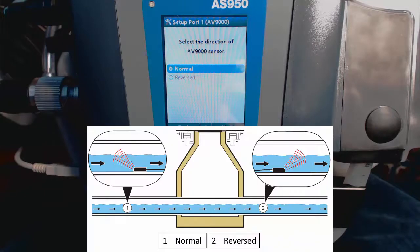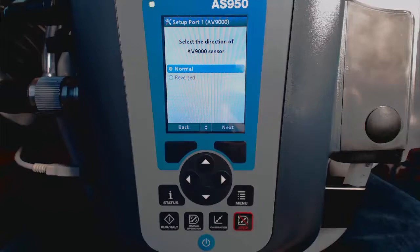The first question pertains to sensor direction. Choose Normal or Reversed, based upon which direction the sensor will face in the flow. Next, we will select the Flow Calculation Method, and with an AV9000, you're most likely to be choosing Area Velocity.